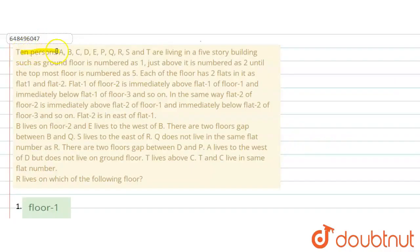The question says, 10 persons A, B, C, D, E, P, Q, R, S, T are living on a 5-story building such that ground floor is number 1, and just above it is number 2, until the topmost floor which is number 5. Each floor has 2 flats as flat 1 and flat 2. Flat 1 of floor 2 is immediately above flat 1 of floor 1, and immediately below flat 1 of floor 3 and so on. In the same way, flat 2 of floor 2 is immediately above flat 2 of floor 1, and immediately below flat 2 of floor 3 and so on. Flat 2 is in the east of flat 1.